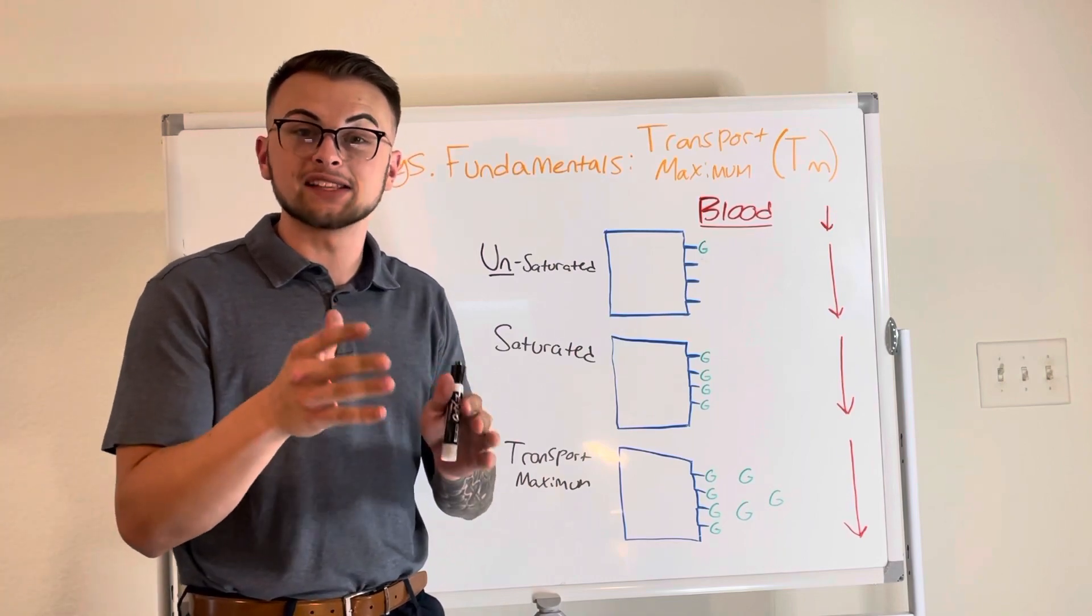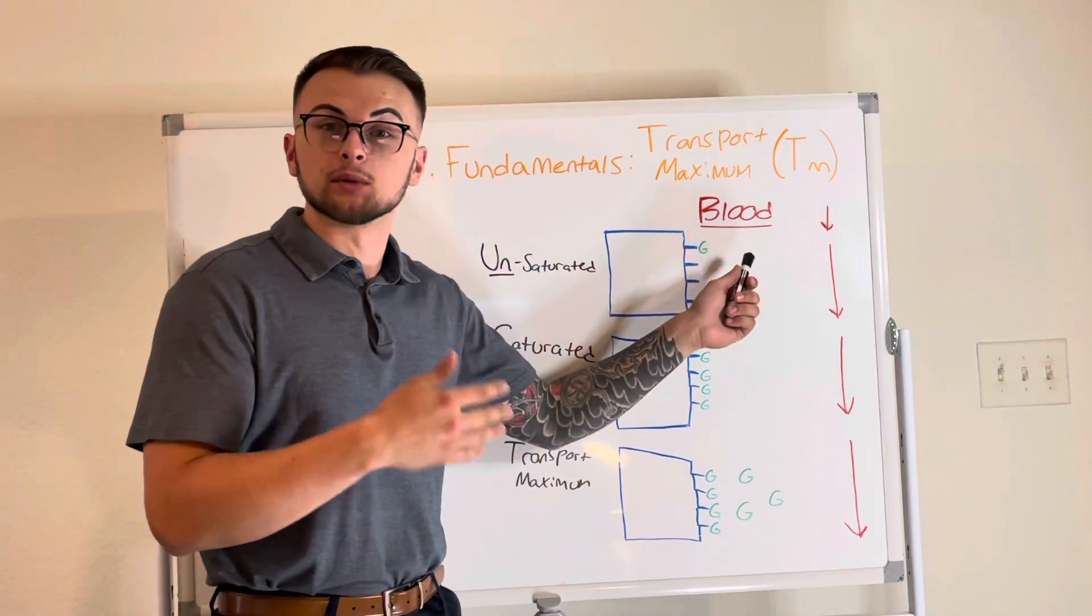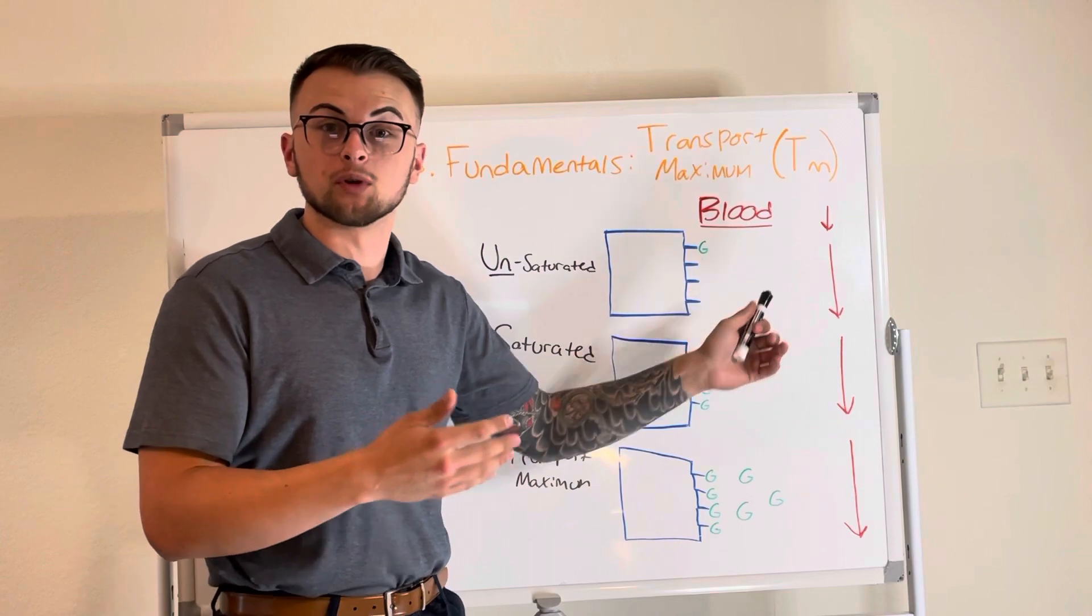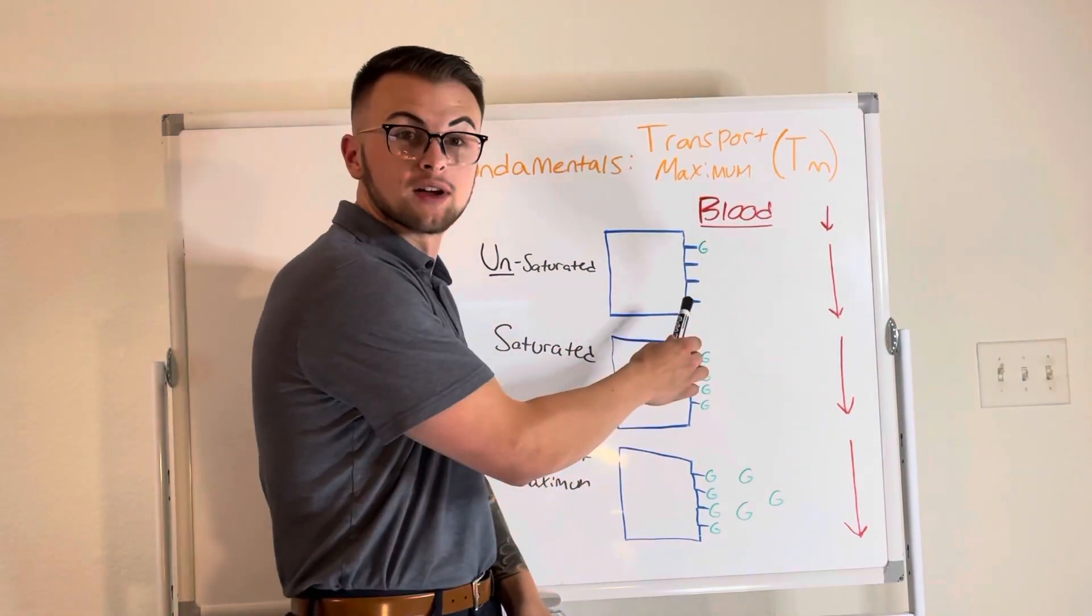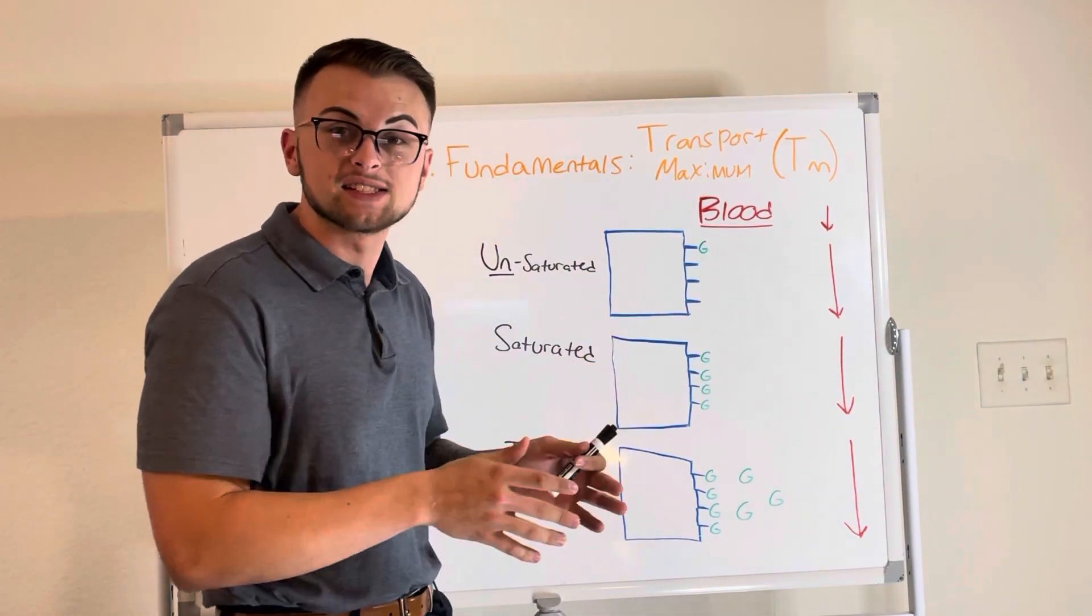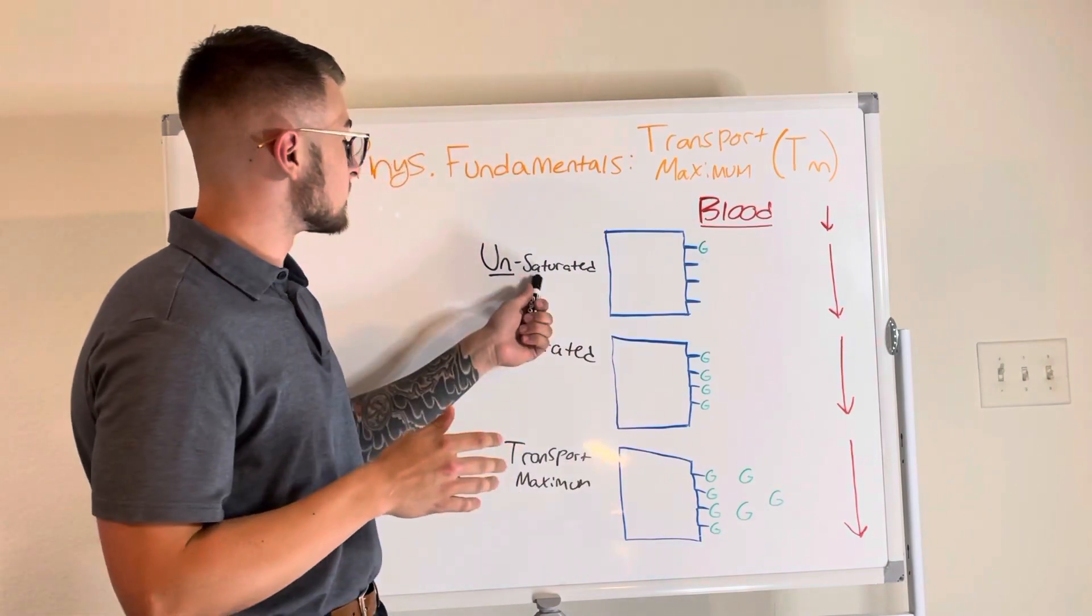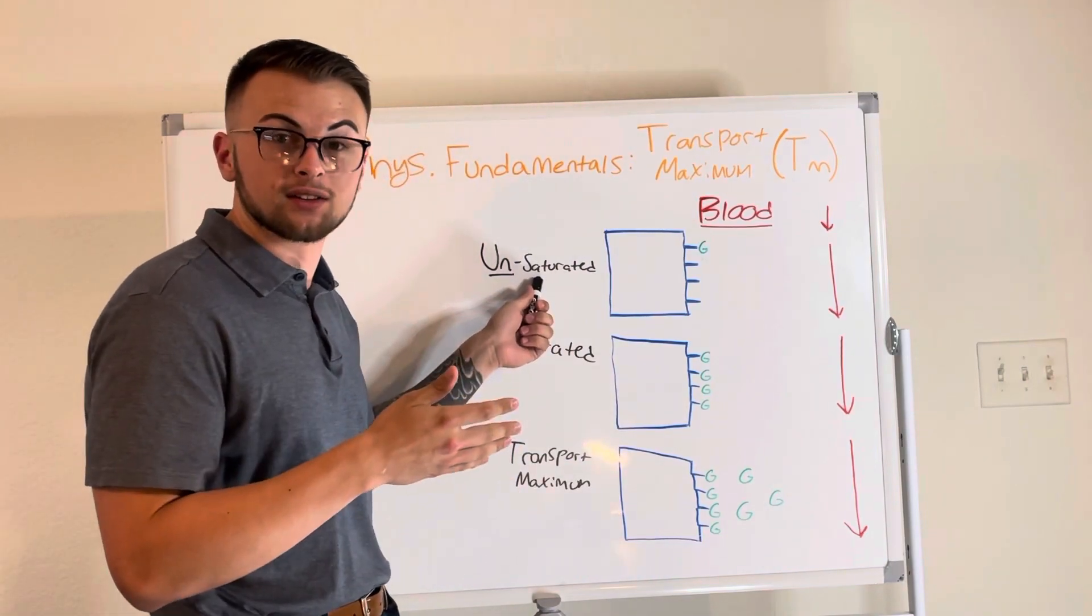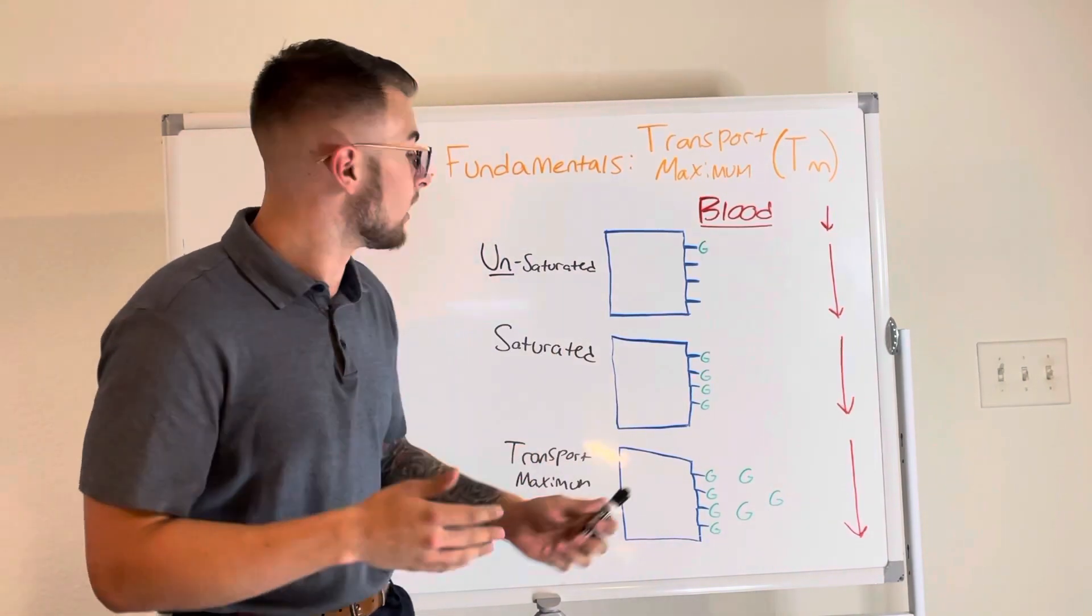Let's say the blood is flowing with glucose, and the glucose people come to sit on the bus. If there are enough seats, we say that the bus is unsaturated.